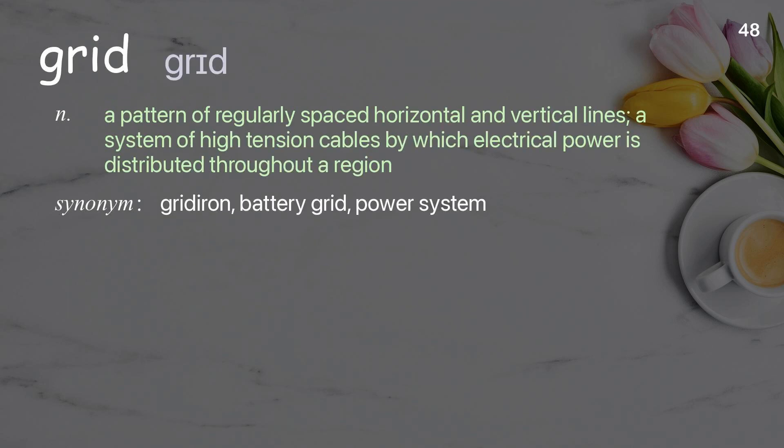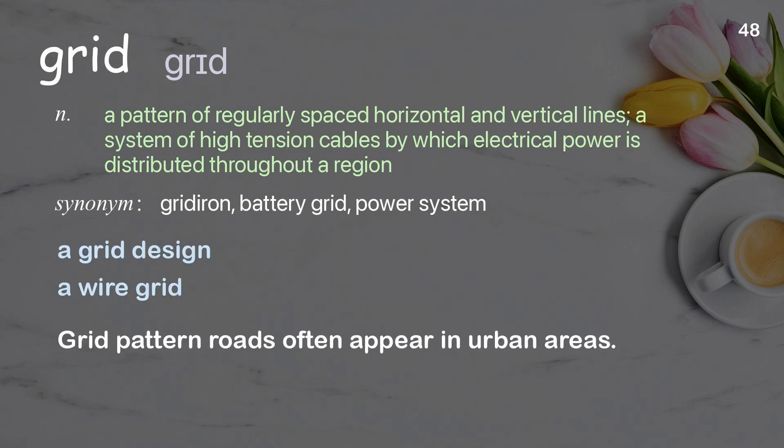Grid. A pattern of regularly spaced horizontal and vertical lines; a system of high-tension cables by which electrical power is distributed throughout a region. Examples: A grid design. A wire grid. Grid pattern roads often appear in urban areas.